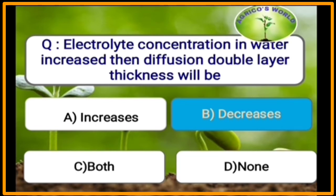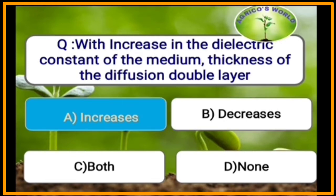When electrolyte concentration in water increases, the diffuse double layer thickness will be decreased. With an increase in the dielectric constant of the medium, the thickness of the diffuse double layer will increase.